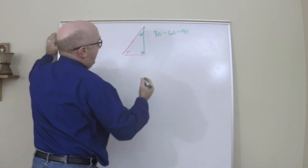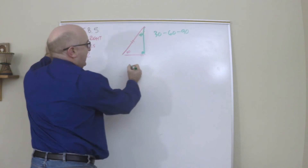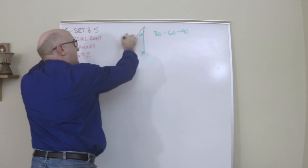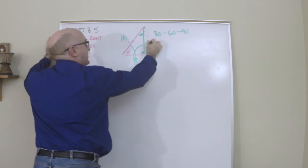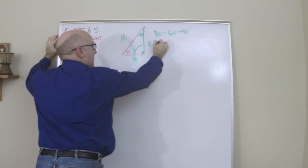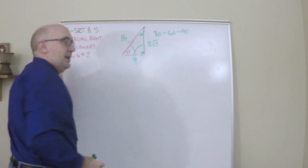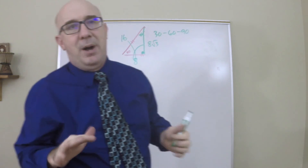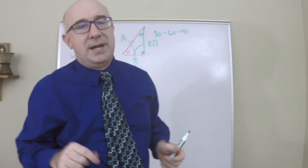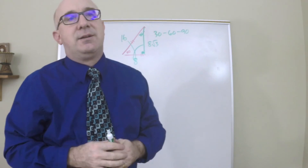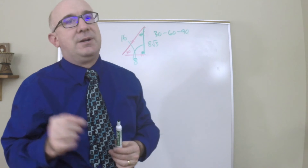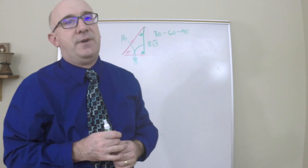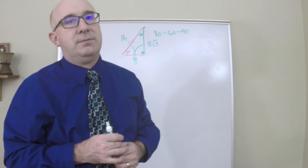Here's how easy this can be: if the short leg is 8, the hypotenuse has to be 16, and the long leg has to be 8√3. These relationships pop up all over the place. This video will be a little bit longer but is very important.